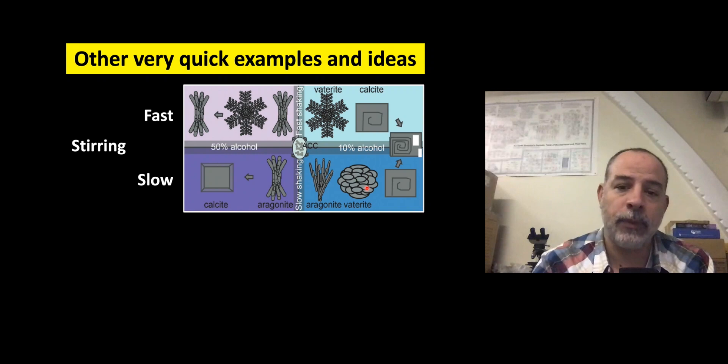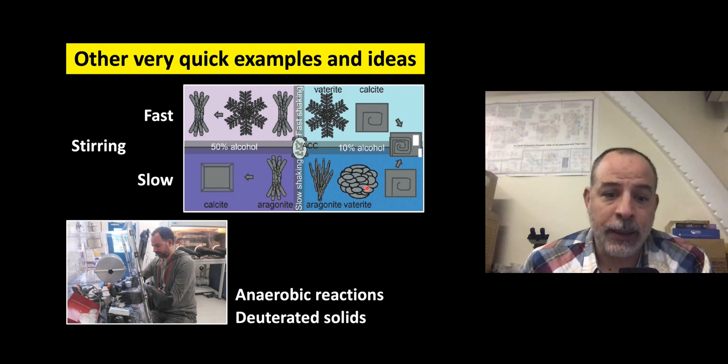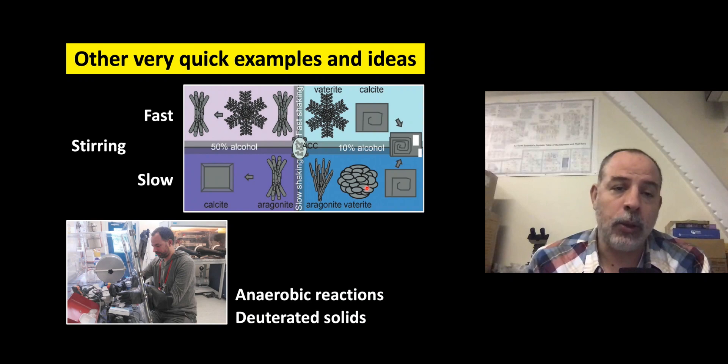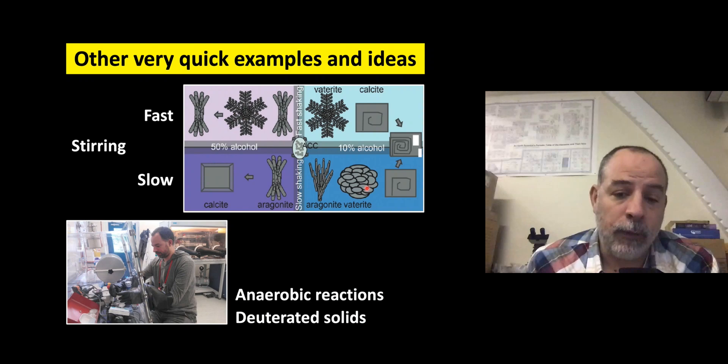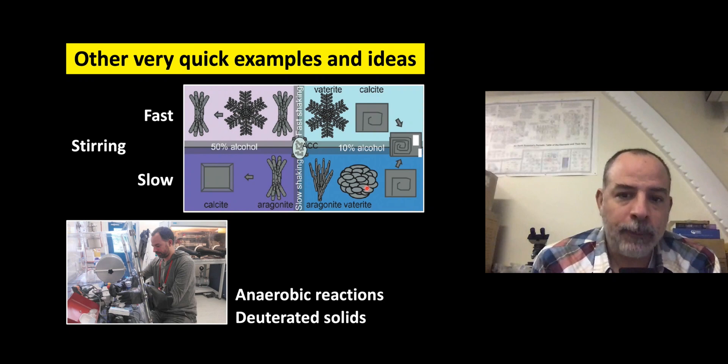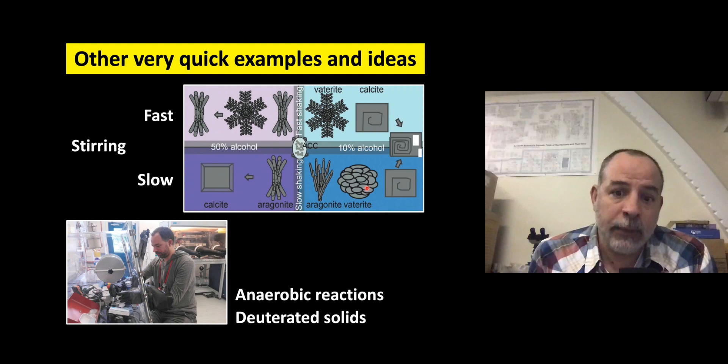Some other things: if you are doing experiments in chambers — for example, because you need to deal with anaerobic reactions or produce deuterated solids — that can be complicated. If the chamber has any leak, even a small one, that can translate into the crystallization of different polymorphs, changes in composition, morphology, and many more things. So this is one more variable to add to the previous ones.